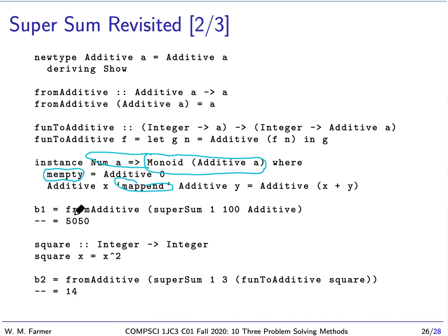So now we can say from additive. Well, first of all, we can say super sum one to 100 with that constructor additive. And then we'll get an answer. And then we'll use from additive to take the wrapper off. And we get the number we expect. If we do the same thing and we compute, we turn our function to an additive version of our function square. And then we're basically going to add the first, second, third squares. We're going to get 14. Okay. So that's how we do additive.